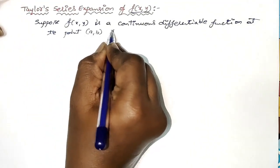Suppose in this formula the point (a, b) becomes the origin, then the Taylor series becomes Maclaurin's series. So Maclaurin's series of f(x, y) becomes f(0, 0) — just replace a equals 0, b equals 0. Whenever we have a and whenever we have b, blindly replace them by 0 and you will get Maclaurin's series expansion.